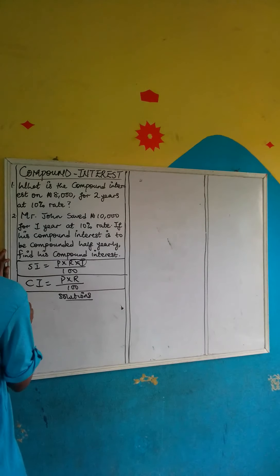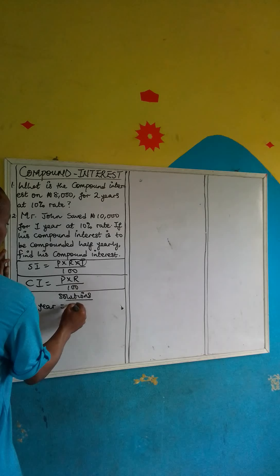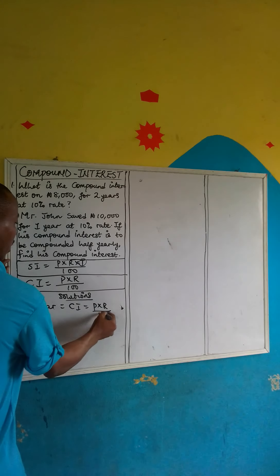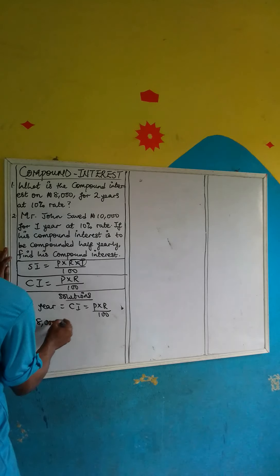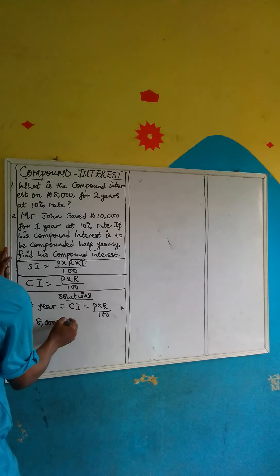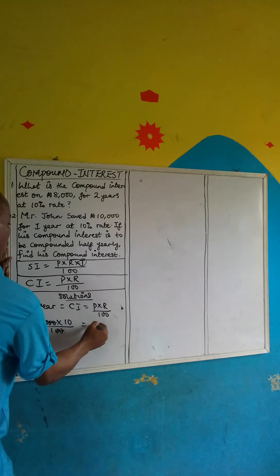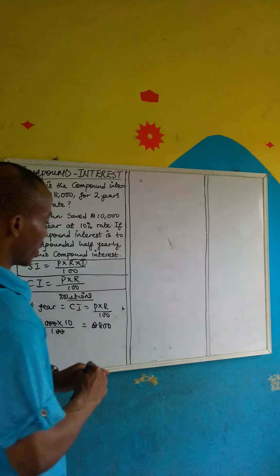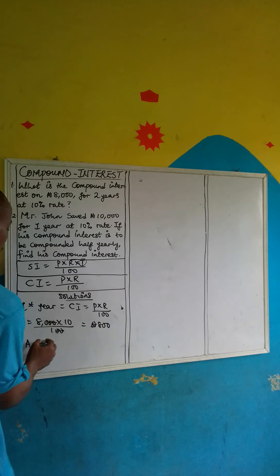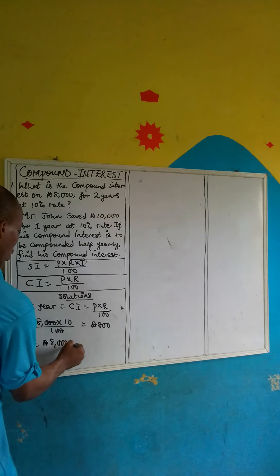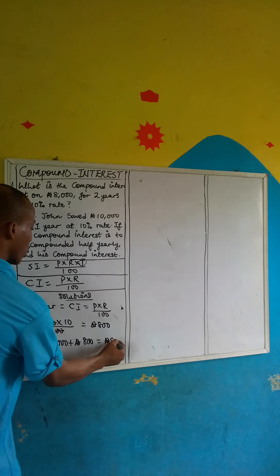Let's get the interest for the first year. Using CI equals principal times rate divided by 100, the principal from the question is 8,000. So that's 8,000 times 10 over 100. The two zeros cancel, giving us 80 times 10 which equals 800. Now the total amount equals the principal plus interest: 8,000 plus 800 equals 8,800.